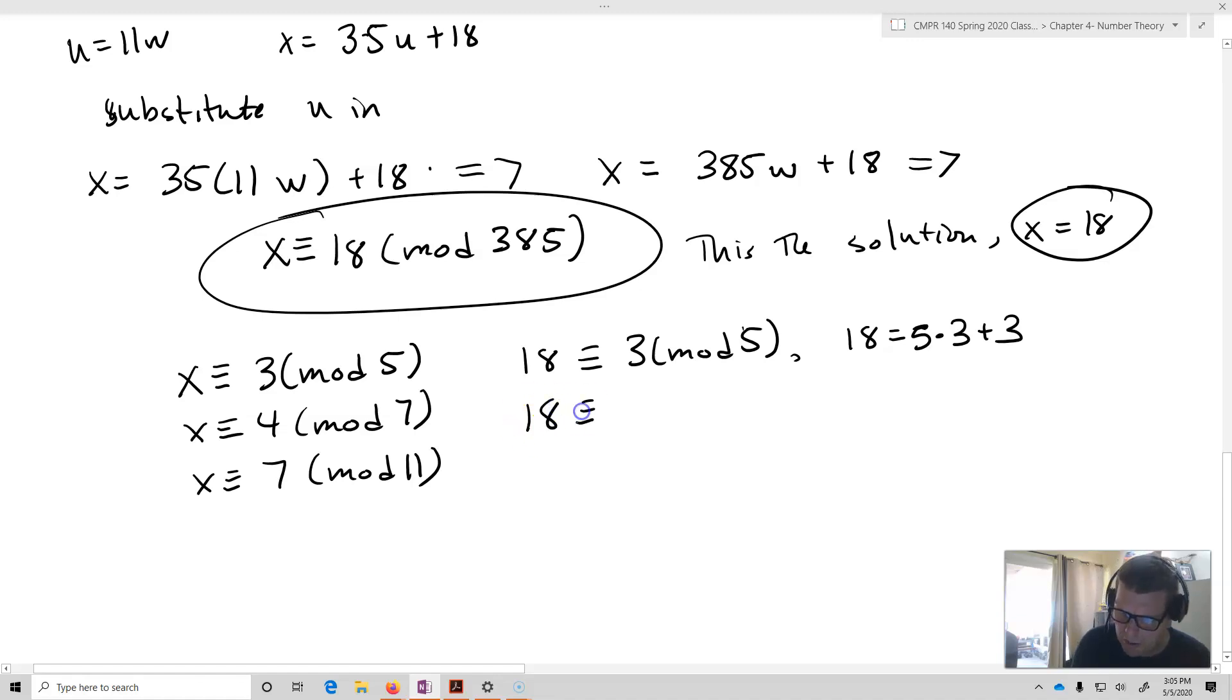How about is 18 congruent to 4 mod 7? Well, yeah, it is. Because 18 equals 2 times 7 plus 4. And then, is 18 congruent to 7 mod 11? Well, yeah, it is. Because 18 equals 11 times 1 plus 7. Check, check, check. So x equals 18 is the solution.